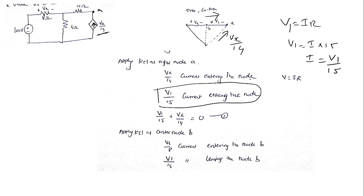Next I apply KCL at node B. We know the current through the 15-ohm is V1/15 and the current through the 8-ohm is Vx/8. Based on passive sign convention — current enters positive, leaves negative — Vx/8 is the current entering node B and V1/15 is the current leaving node B. I still need to find the current flowing through the 4-ohm resistor.